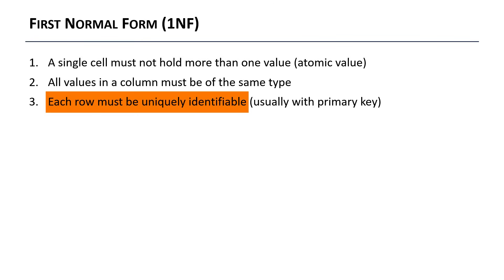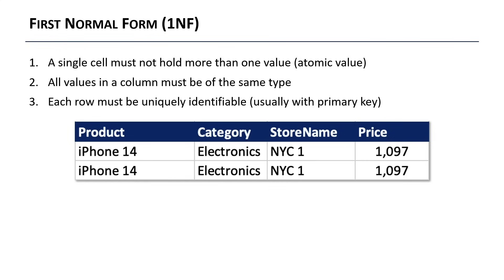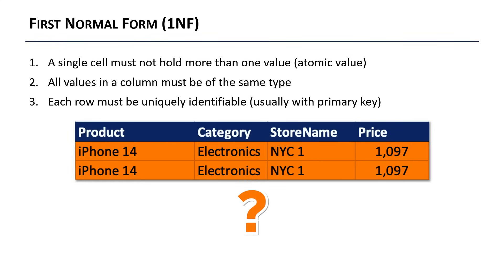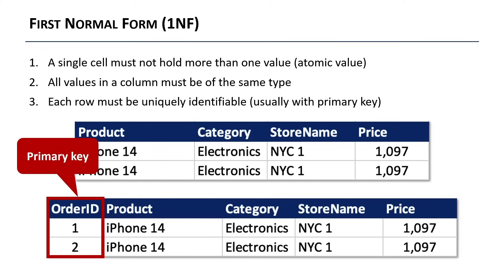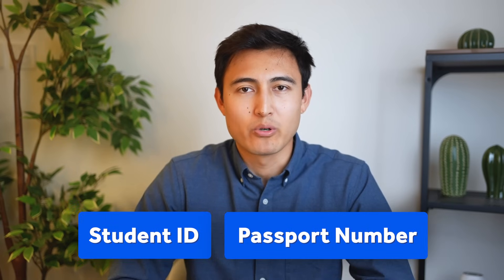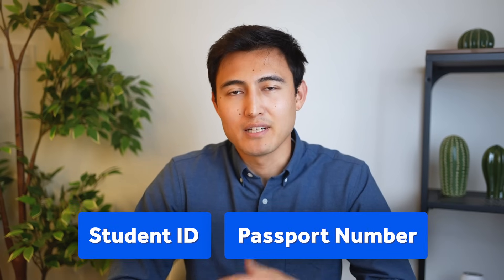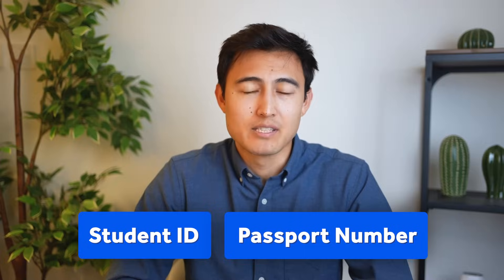The final part of 1NF is that each row must be uniquely identifiable. For example, if there's no difference between two rows in this table, you create a primary key — a special column or combination of columns that uniquely identifies each row. In this case it's the order ID, but other examples include a student ID or passport number, where no two people can have the same one.